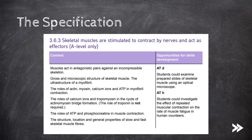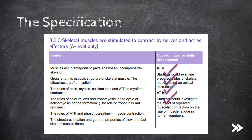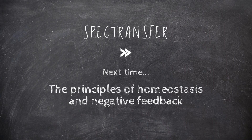Great, that covers skeletal muscles. We've covered how muscles act in antagonistic pairs against an incompressible skeleton, the gross and microscopic structure of skeletal muscle, and the ultra-structure of a myofibril. We've covered the roles of actin, myosin, calcium ions, and ATP in myofibril contraction, as well as the roles of calcium ions and tropomyosin in the cycle of actinomyosin bridge formation. We've also covered the roles of ATP and phosphocreatine in muscle contraction, and the structure, location, and general properties of slow and fast skeletal muscle fibres. Thanks for watching — please subscribe and comment. Next time we will be covering the principles of homeostasis and negative feedback. See you next time.